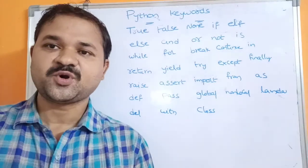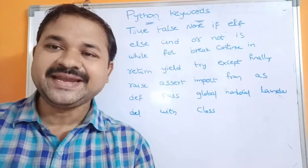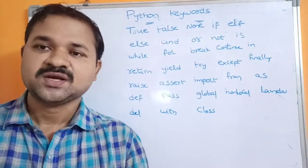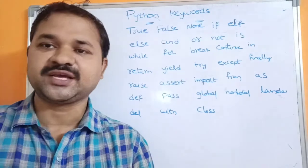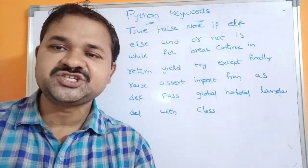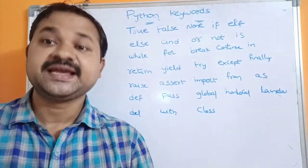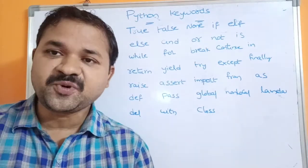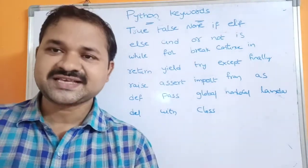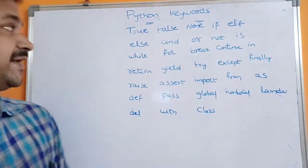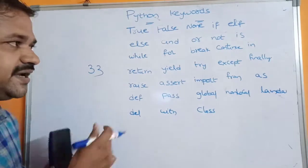In this video, we are going to discuss keywords in Python programming. Keywords are predefined or reserved words whose meaning is already fixed. We can only use a keyword for its intended purpose — it is not possible to change the meaning of a keyword or use it as an identifier. That means we cannot use a keyword as a variable name, function name, class name, or object name. Python supports a total of 33 keywords.